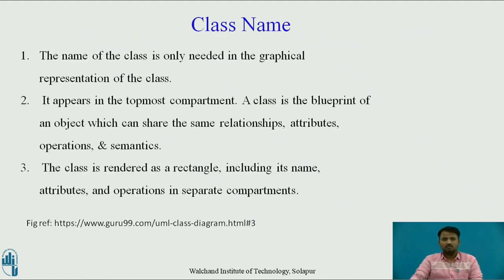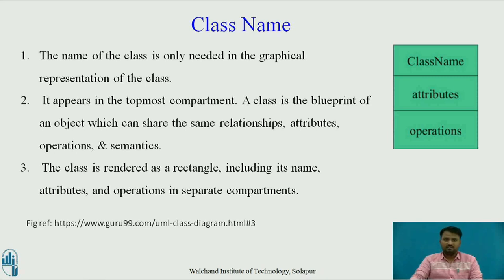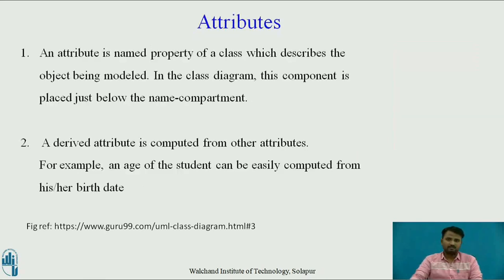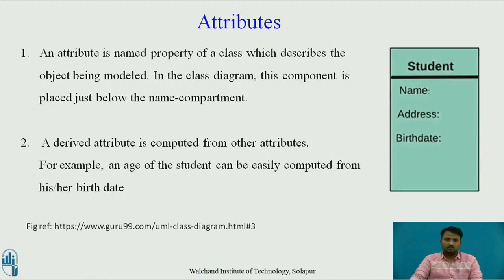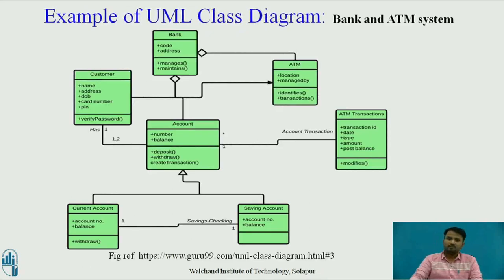Class name: the name of a class is only needed in the graphical representation. The class is rendered as a rectangle including its name, attributes and operations in separate compartments. Attributes: an attribute is a named property of a class which describes the object being modeled. In the class diagram, this component is placed just below the name compartment. A derived attribute is computed from other attributes — for example, the age of a student can be computed from his or her birth date. Here is an example of a UML class diagram showing many relationships, associations — it is a diagram of a bank and ATM system.